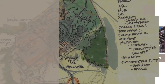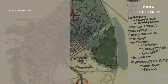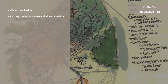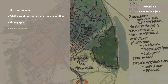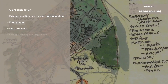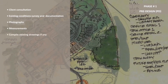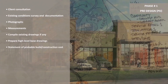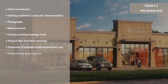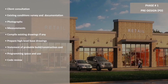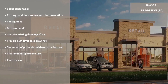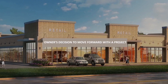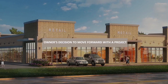Phase 1: Predesign. The first objective is to get together with the client and determine overall project vision and goals. There are some key areas to discuss about the project: scope, features, purpose, and functionality. This phase ends with the owner's decision to move forward with the project.